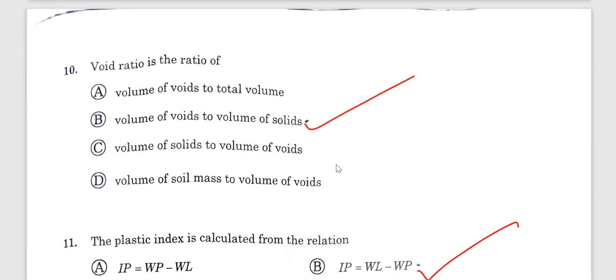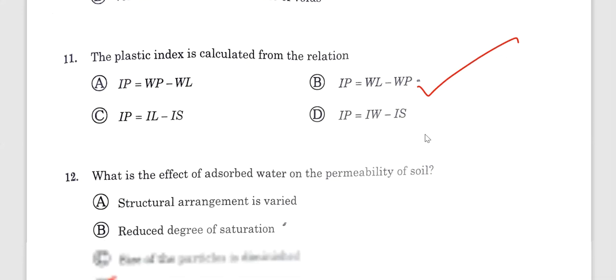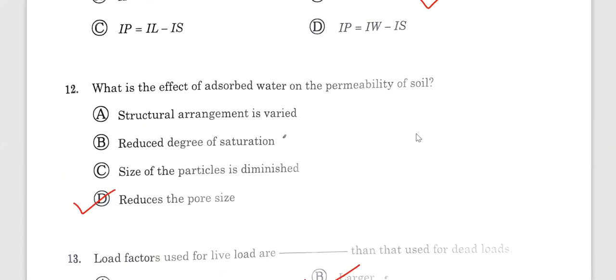Question 10. Void ratio is the volume of voids to volume of solids. Question 11. Plastic index is the liquid limit minus plastic limit. Question number 12. What is absorption of water? What is the effect of permeability? It is absorption of water. This is mainly a reduction of pore size, and it reduces the pore size and decreases the permeability value. Option B is correct.